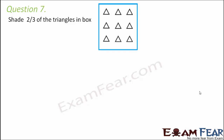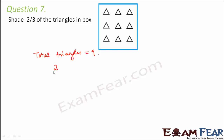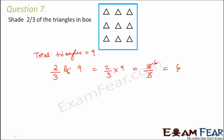Question 7: Shade 2 thirds of the triangles in a box. The box contains 9 total triangles. We need to shade 2/3 of 9, which equals 2/3 multiplied by 9 = 18/3 = 6. So we shade 6 triangles in the box.